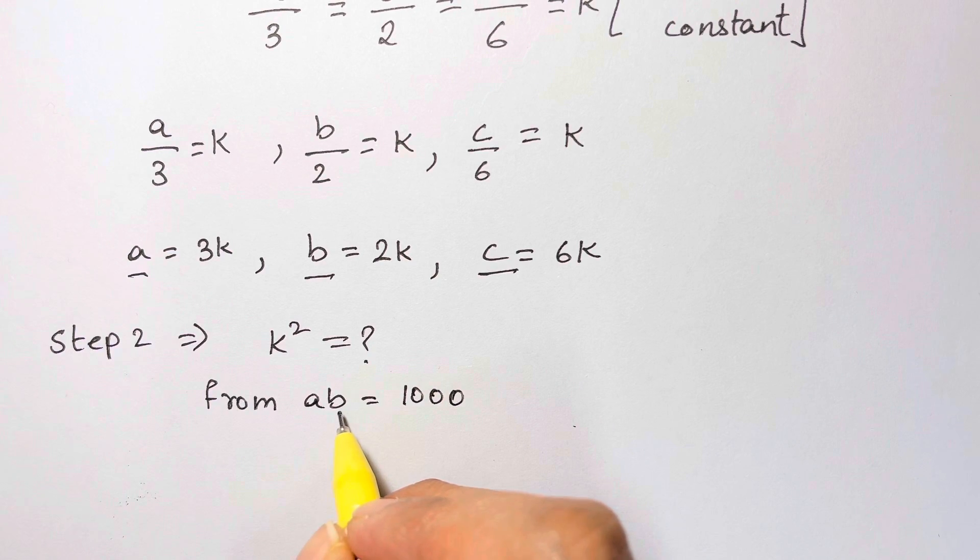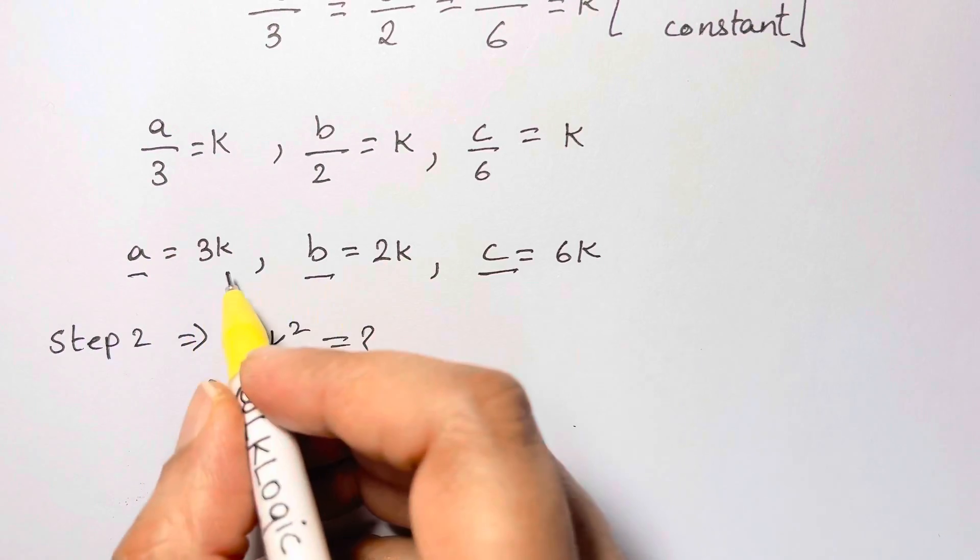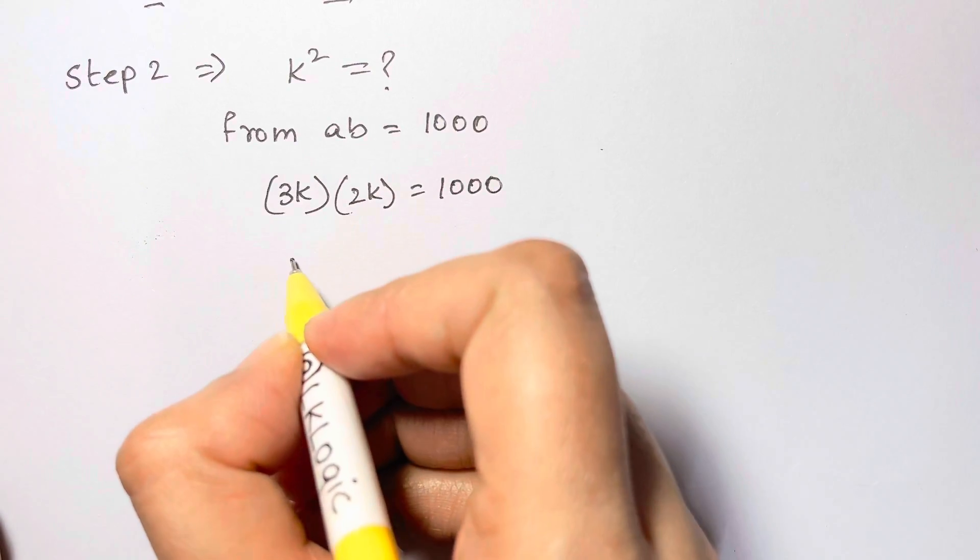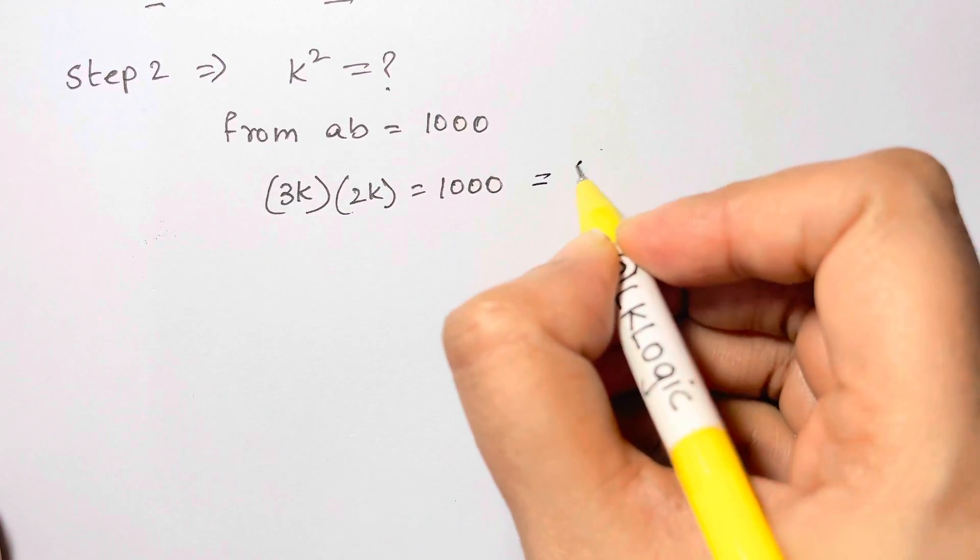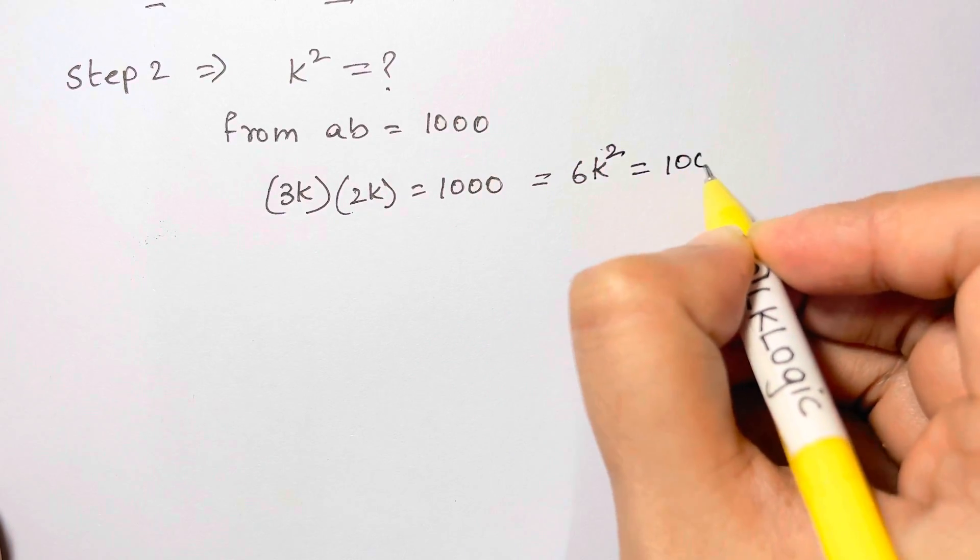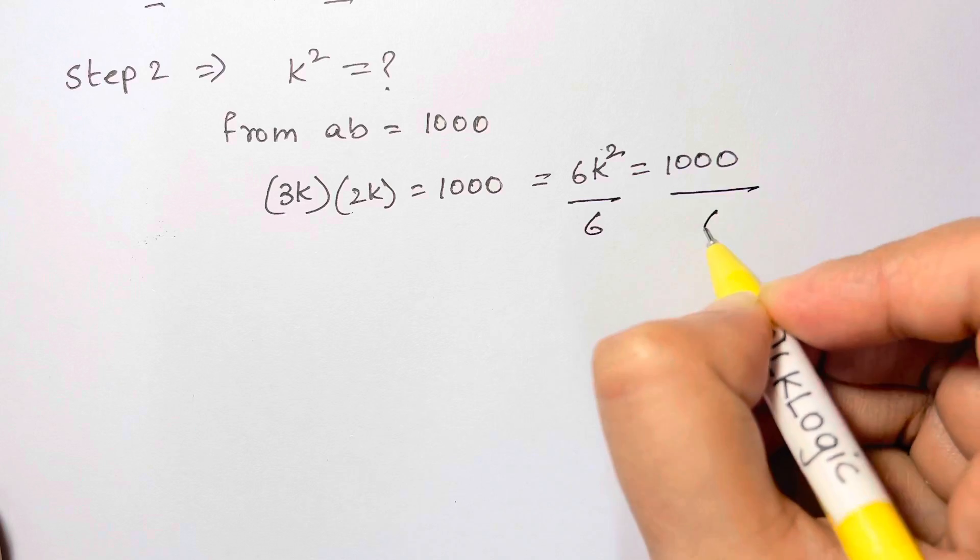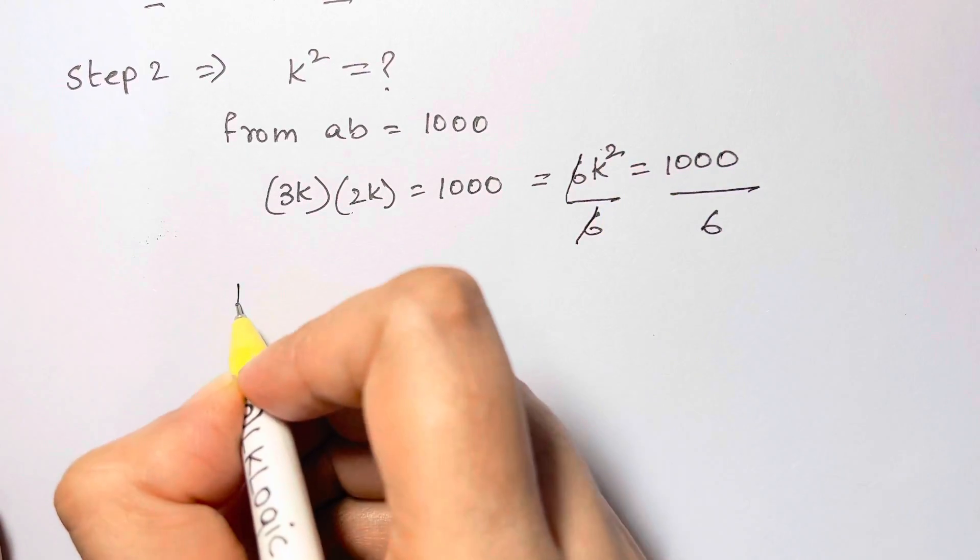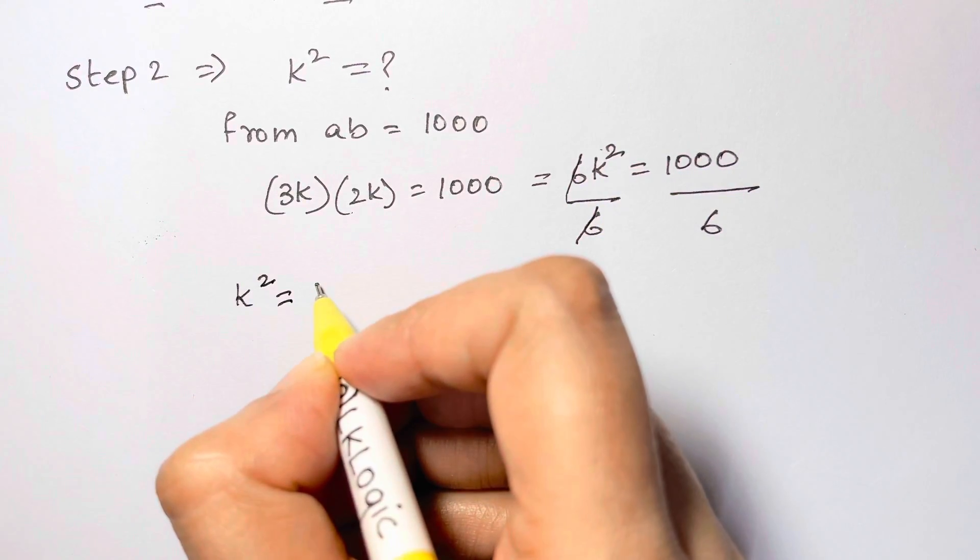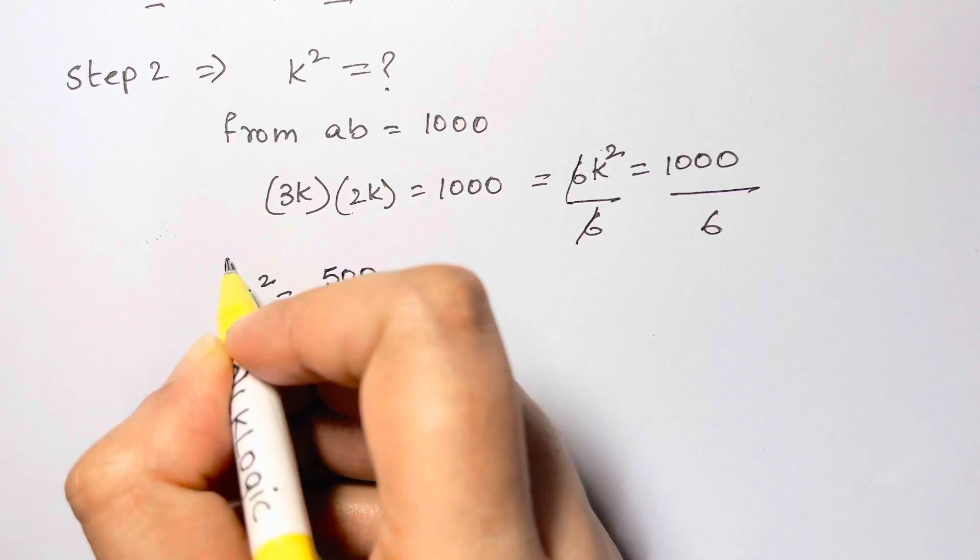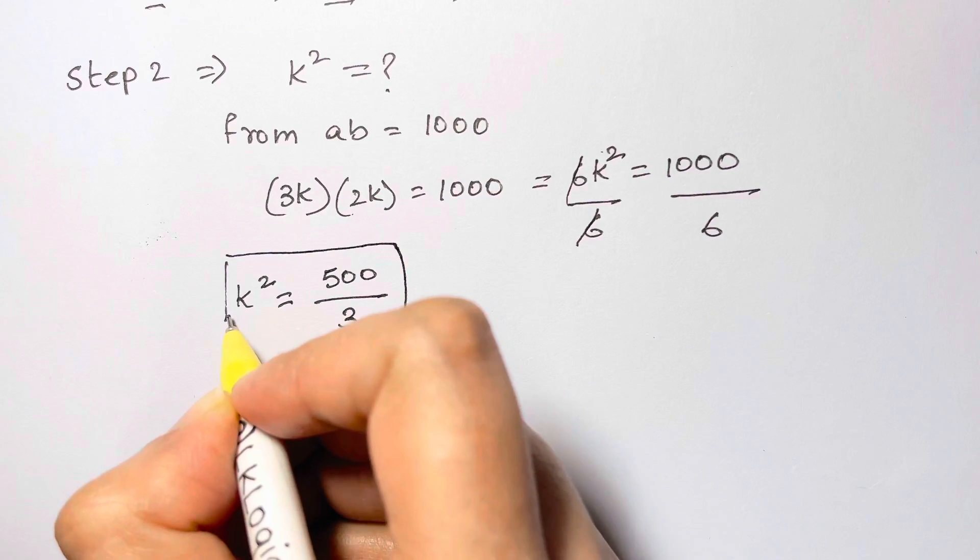So let's substitute the values of a and b. It's 3k times 2k, which is equal to 1000. So we have 3 times 2 is equal to 6k² is equal to 1000. So let's divide both sides by 6 to cancel this. So we get k² is equal to 1000 over 6, that is 500 over 3. So we got the value of k² in the second step.